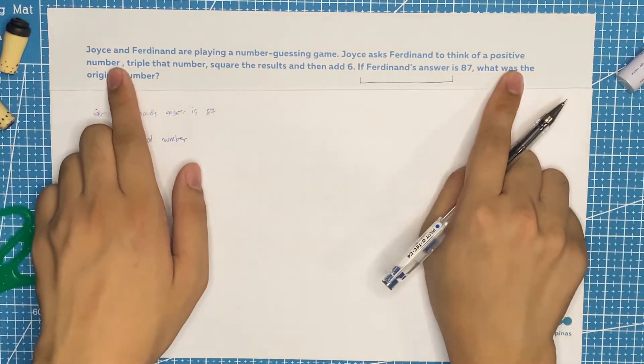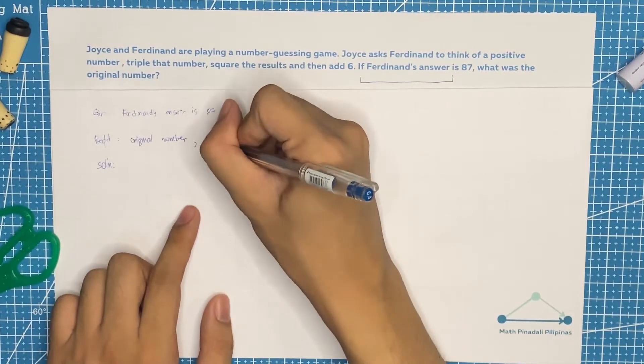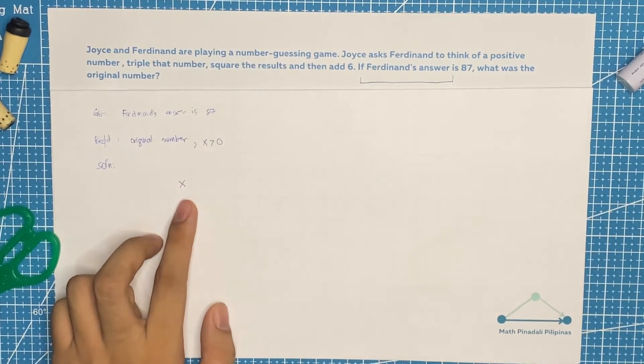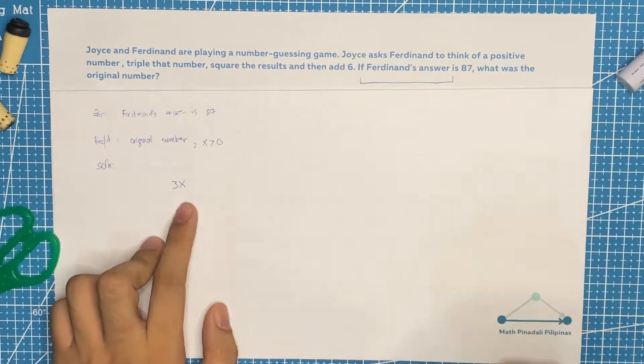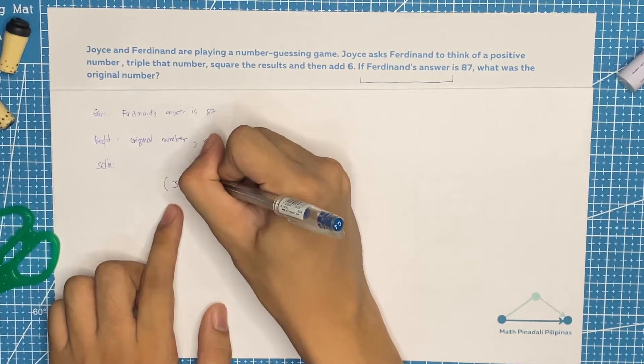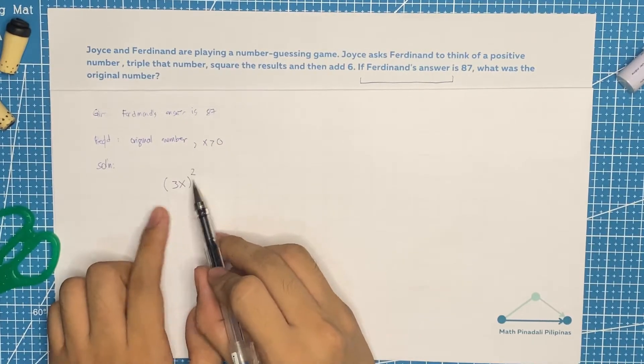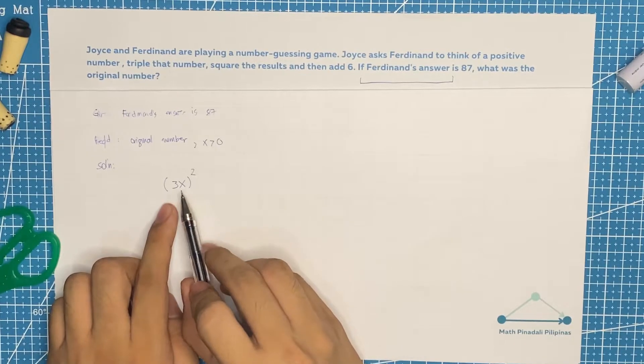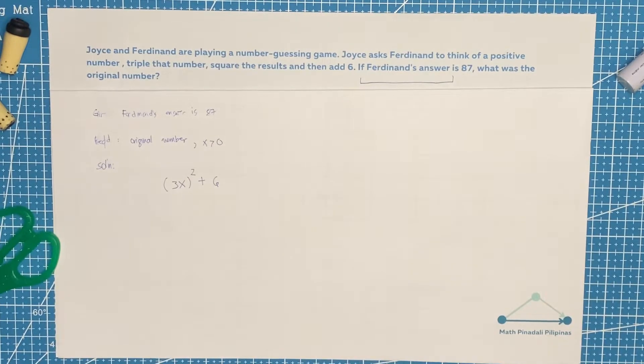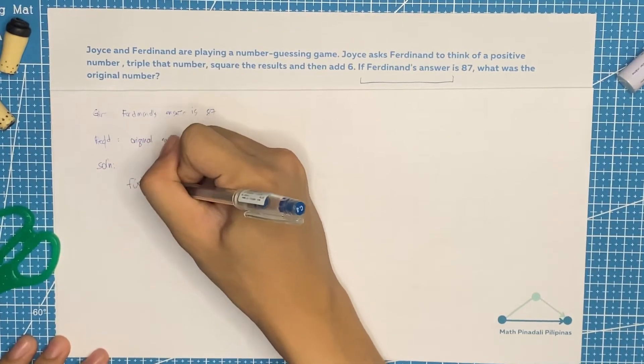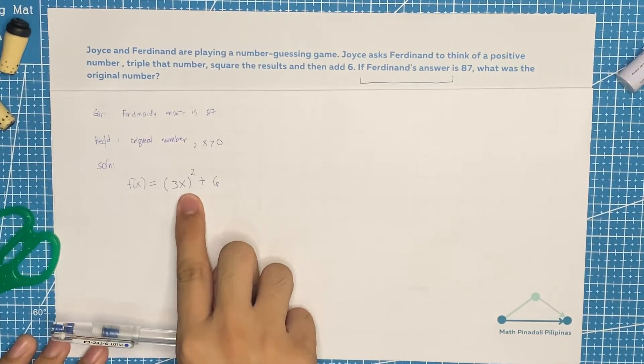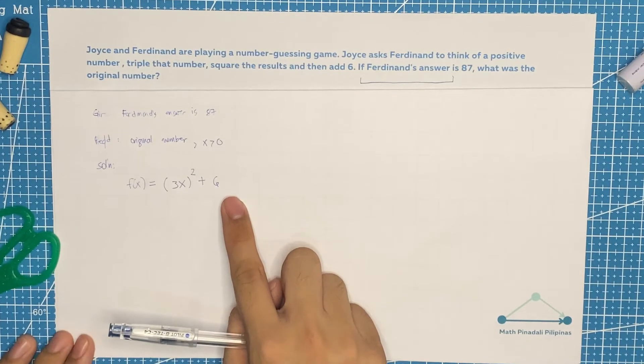Think of a positive number and let that number be x. It should be positive, so x should be greater than zero. Triple that number, so that should be 3x. Square the results, that would be 3x squared. Don't forget, it's not just x that's squared, but including the 3. So that would be 3x squared, then add 6. This would be our function for Ferdinand's answer.